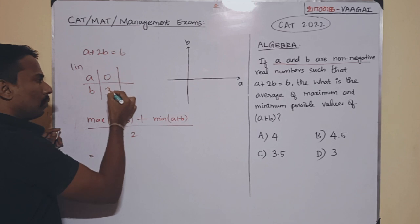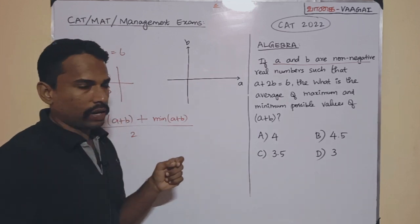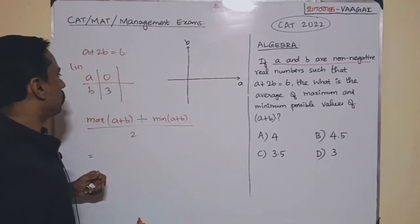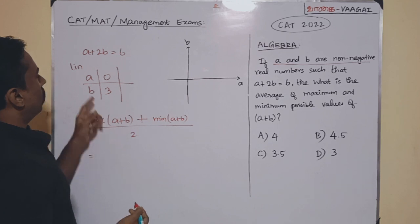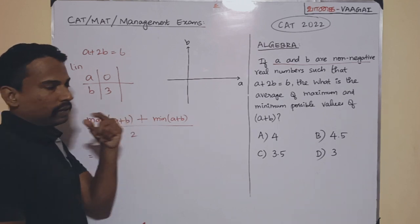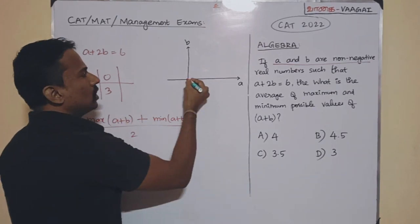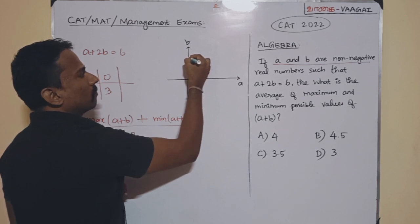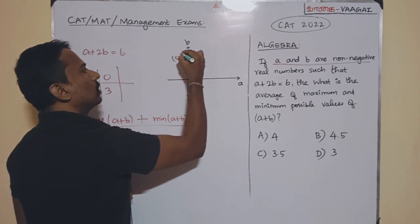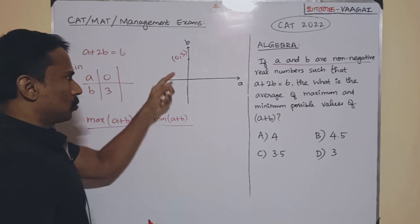So, 0 comma 3 will be a point on that line. So, where will be 0 comma 3? 0 comma 3 means when A is 0, B is 3. Remember that carefully. So, A is 0 and B is 3. It will be like here. So, 0 comma 3. This is one point.